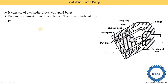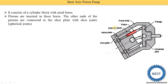Pistons are inserted in these bores. Here you see this is the piston. These pistons are inserted in the bores or holes. One end of the piston is inside the bore and the other end of the piston is connected to the shoe plate with spherical joints. The shoe plate is not separately shown in this figure because the shoe plate and the flange are together. Another component here is the universal joint that joins the flange and the cylinders.